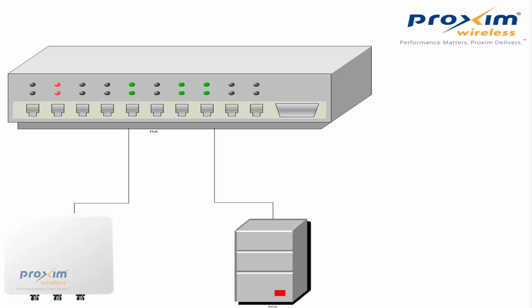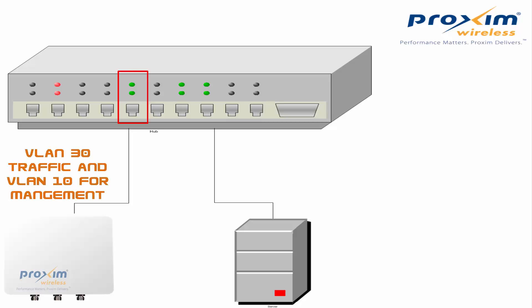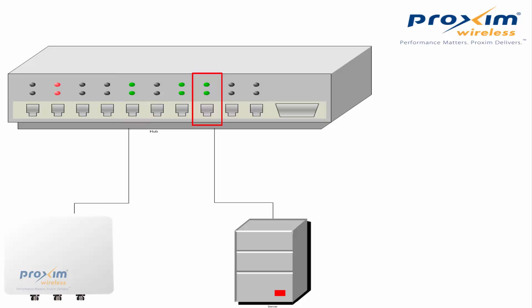Go to the switch port that the radio is connected to. We have VLAN 30 and VLAN 10 — VLAN 30 is traffic, VLAN 10 is management. That switch port is going to be configured for both VLAN 30 and VLAN 10. Then go to the switch port where the PC is connected. It depends on whether the PC is VLAN aware or unaware. If it is aware, you can set it to trunk VLAN 10 and set your NIC to VLAN 10.